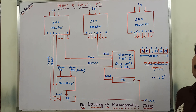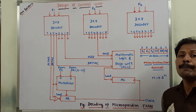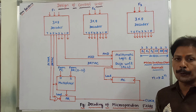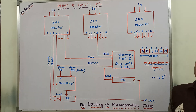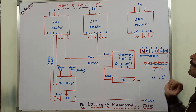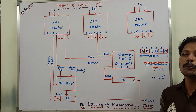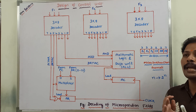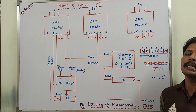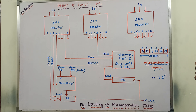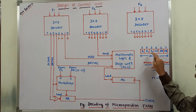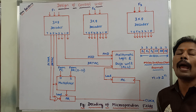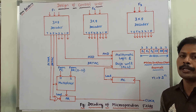Next, the BR field contains the type of branch to be used. It consists of 2 bits. Next, the CD field consists of 2 bits. Based on the status bit conditions, we have to perform the branch operation. Next, F1, F2, and F3 are called the microoperation fields.